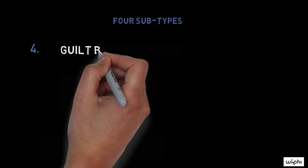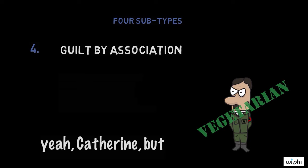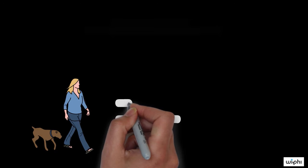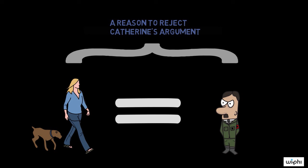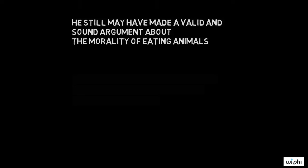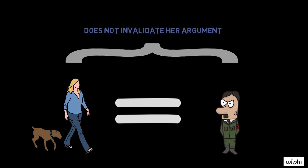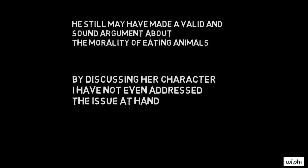The last type is the guilt by association ad hominem. Suppose my response to Catherine is: 'Yeah, Catherine, but towards the end of his life, Hitler was a vegetarian, so you might have made a similar argument. Since we'd reject his argument simply because he is Hitler — the most evil person in the world — we should obviously reject your argument too.' I've associated Catherine with a person of very poor character and suggested that is a reason to reject her argument. This is fallacious because while Hitler was a terrible person, he still may have made a valid and sound argument about the morality of eating animals, and Catherine's slight association with Hitler does not invalidate her argument.